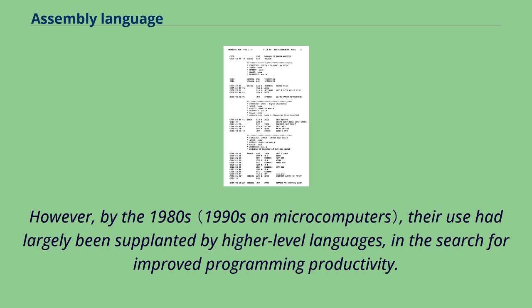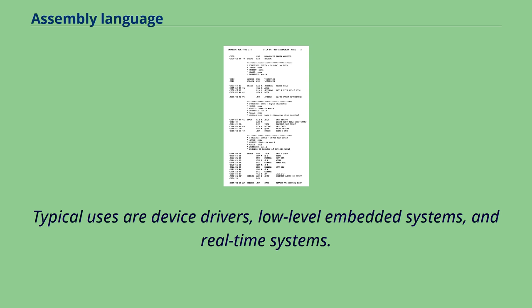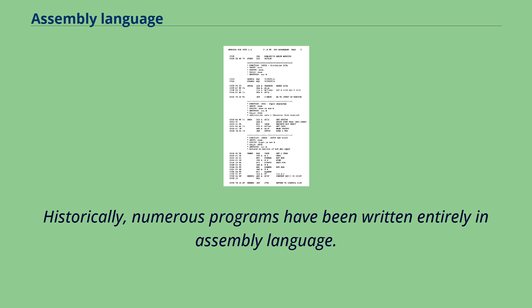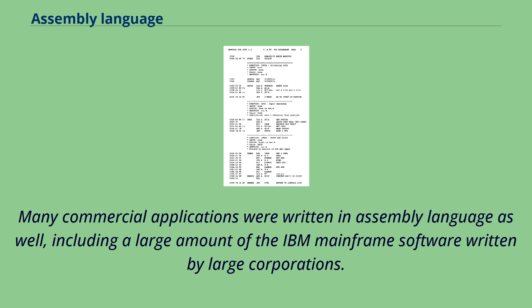Assembly languages were once widely used for all sorts of programming. However, by the 1980s, their use had largely been supplanted by higher-level languages in the search for improved programming productivity. Today, assembly language is still used for direct hardware manipulation, access to specialized processor instructions, or to address critical performance issues. Typical uses are device drivers, low-level embedded systems, and real-time systems. Historically, numerous programs have been written entirely in assembly language. The Burroughs MCP was the first computer for which an operating system was not developed entirely in assembly language; it was written in Executive Systems Problem-Oriented Language, an ALGOL dialect. Many commercial applications were written in assembly language as well, including a large amount of IBM mainframe software.